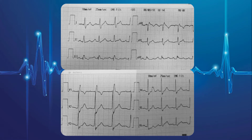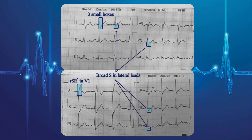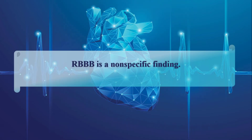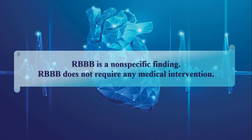Duration of QRS complexes is three small squares, so the complexes are wide. Furthermore, there is RSR prime pattern in V1, in association with broad S wave in lateral leads, which establishes RBBB as the cause of QRS changes in the present strip. Even under pathologic conditions, RBBB is a nonspecific finding and may be caused by a number of factors. So RBBB does not have any specific treatment and does not require any medical intervention.